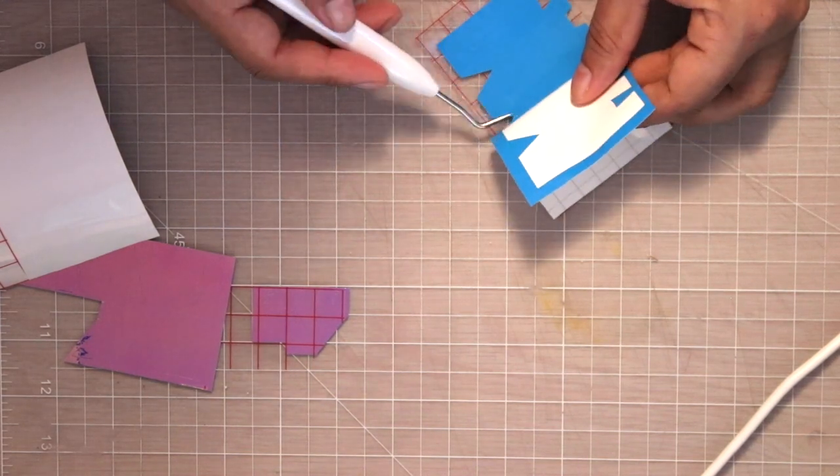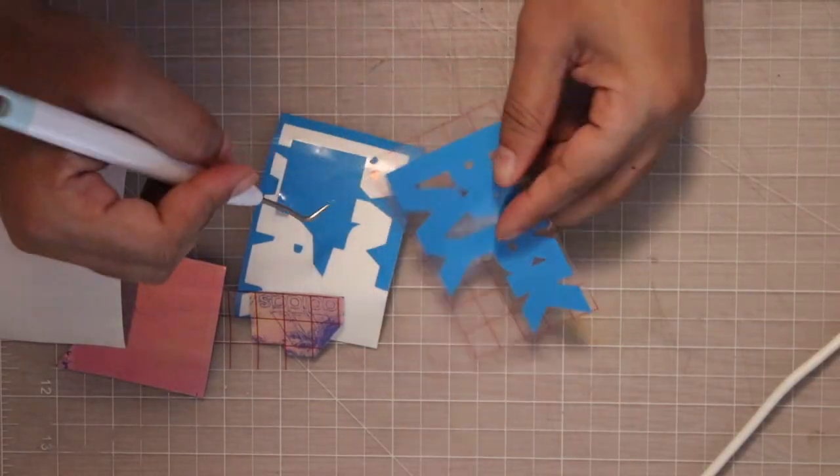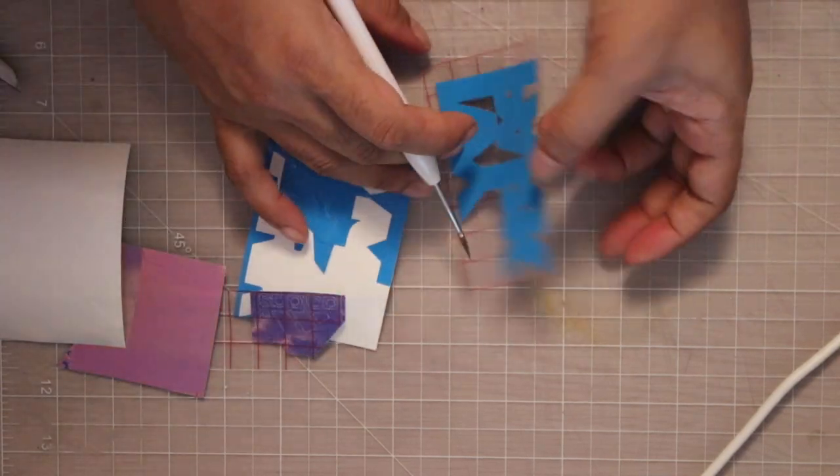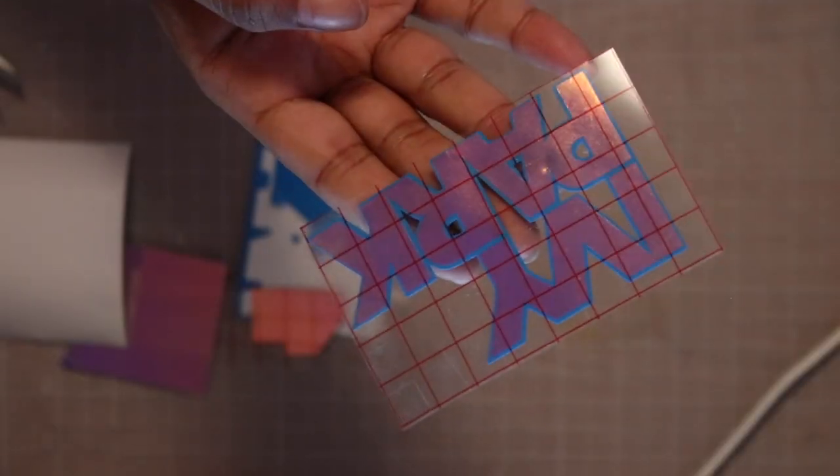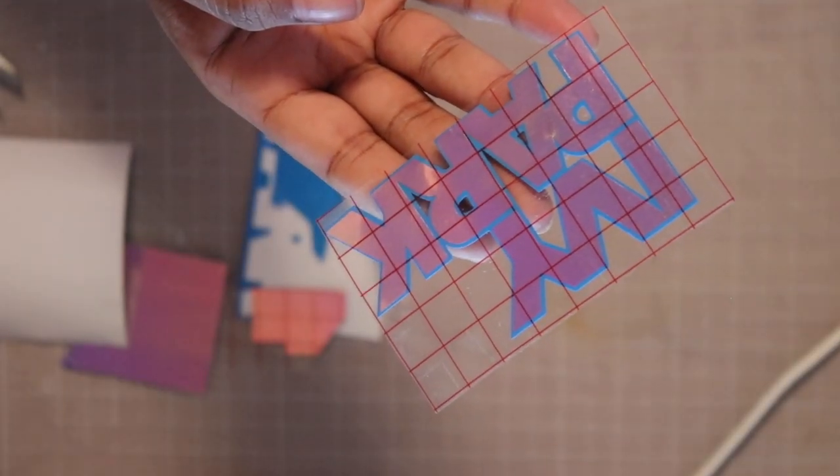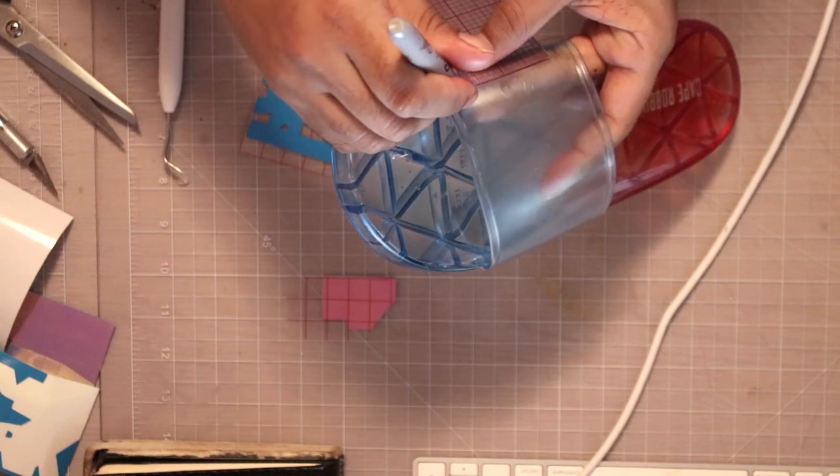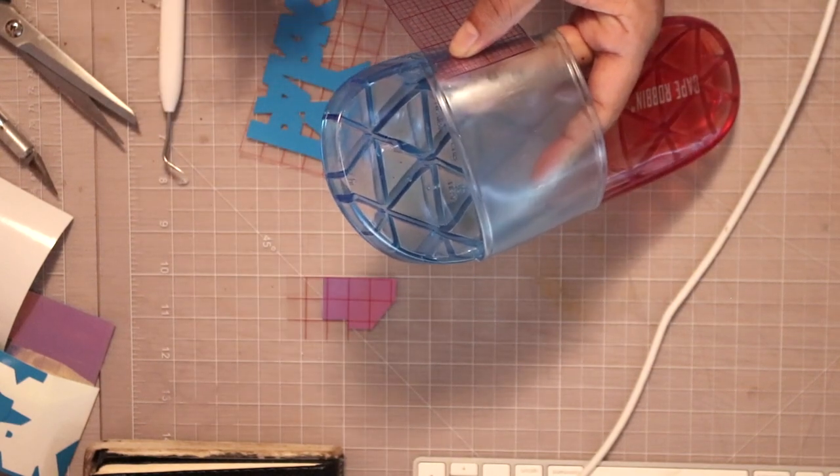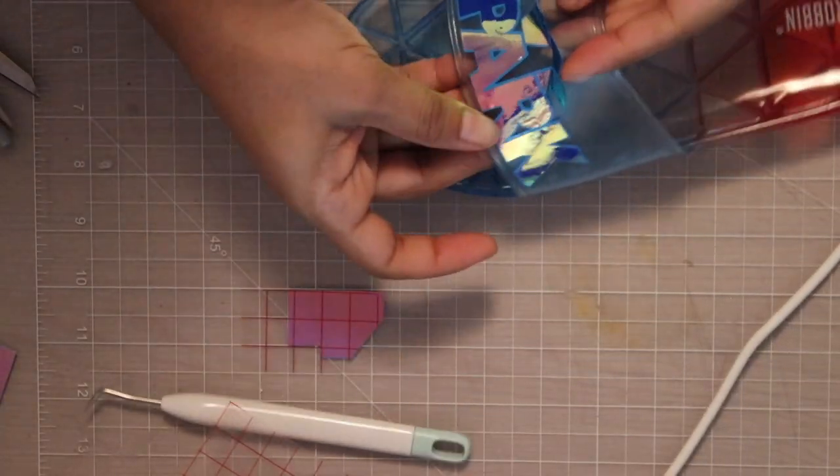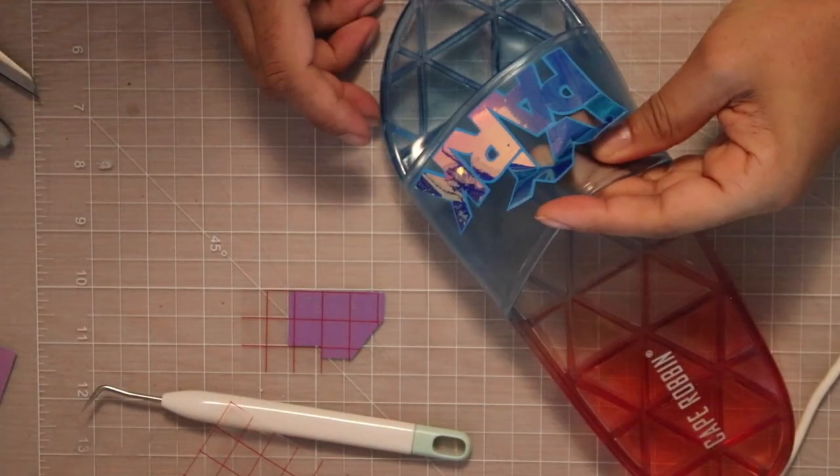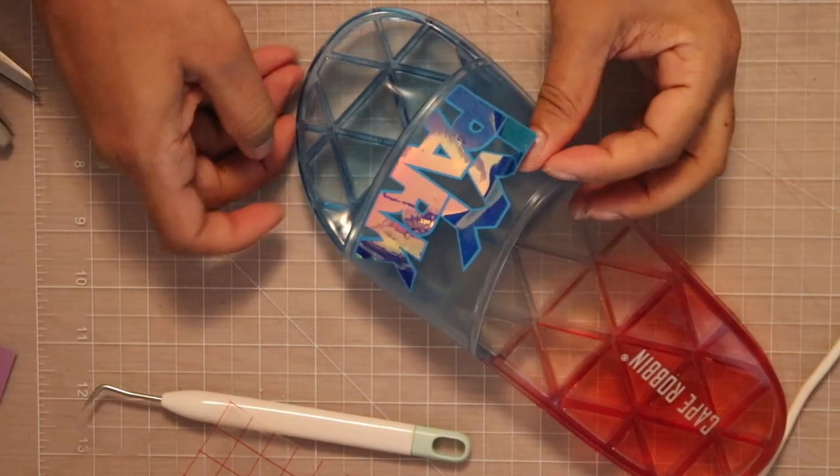Now the thing that I found that was easiest to do was to work from the center and then move outward. So once you establish the center of the sticker and you establish the center of the slide, you just line those two areas up and just basically push.